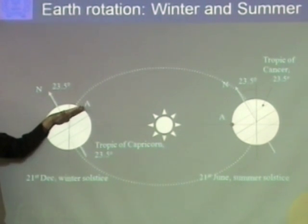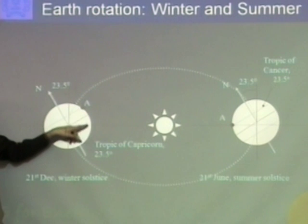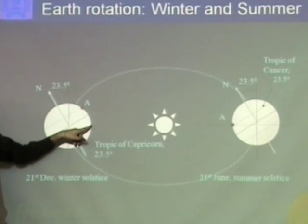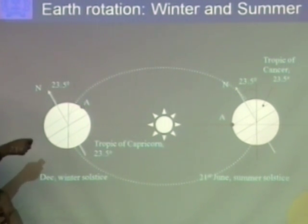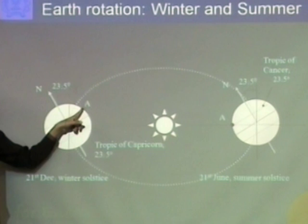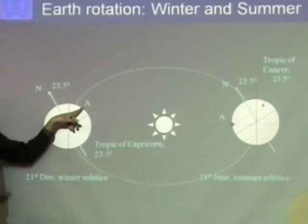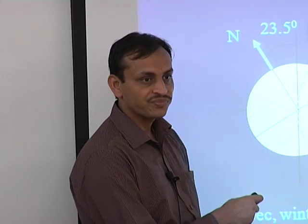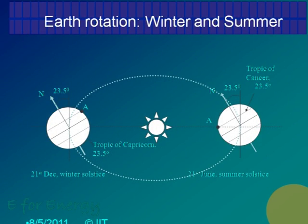Now if it revolves and comes to this condition — same location A — my Tropic of Cancer is here now. I am at the same location, but in this condition, the Tropic of Capricorn is getting the highest radiation. A location there is getting highest radiation, but here it is now the lowest radiation — it is away from the perpendicular line. So same location A, which was having summer there, is now having winter here.